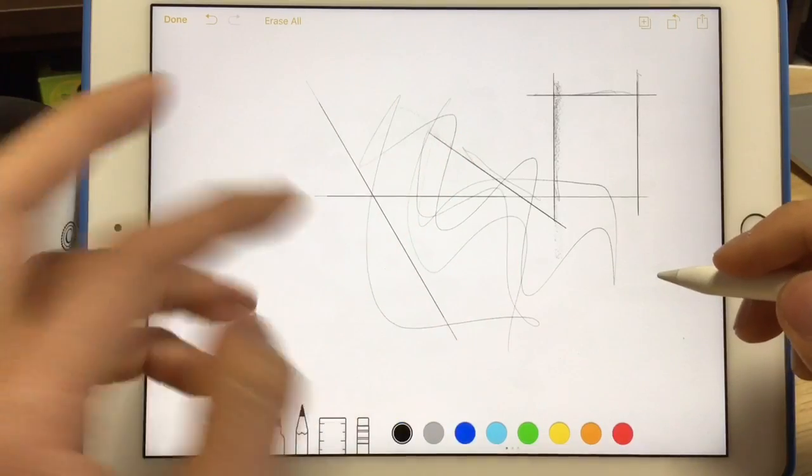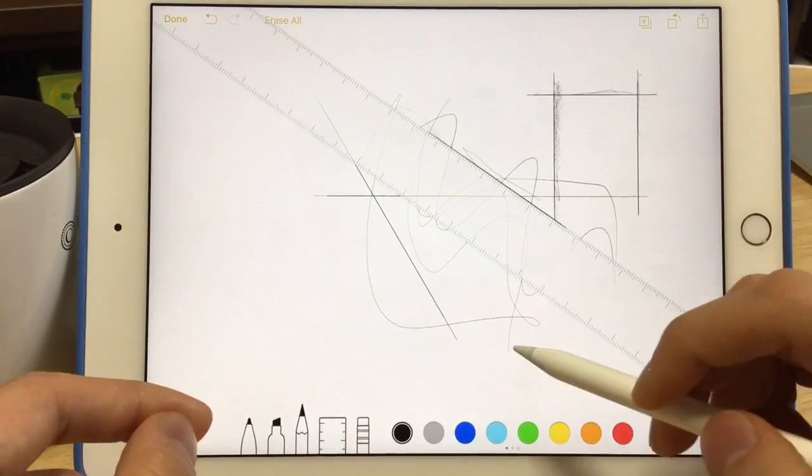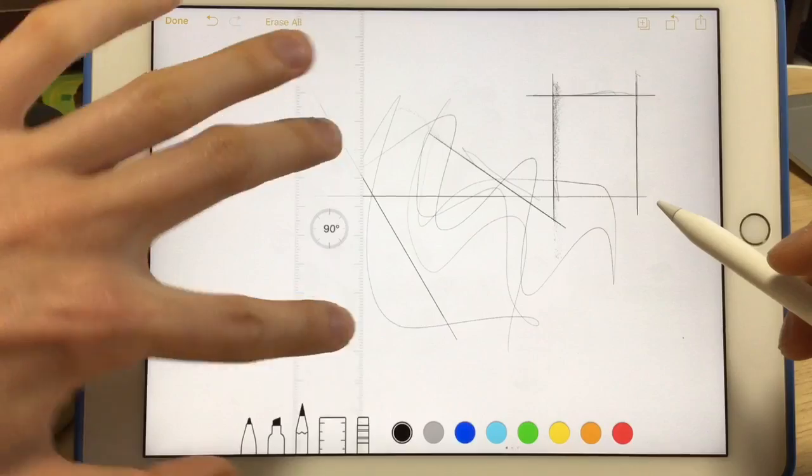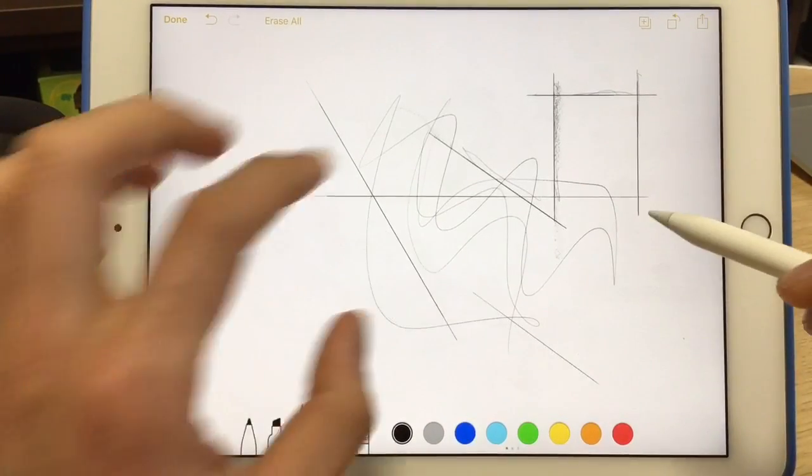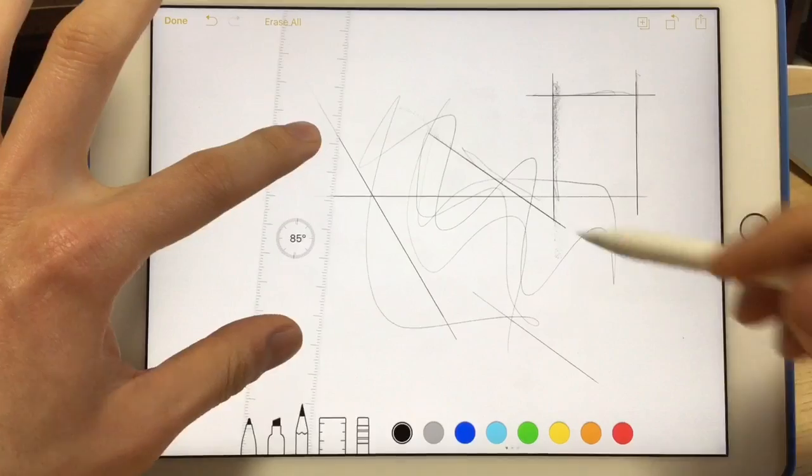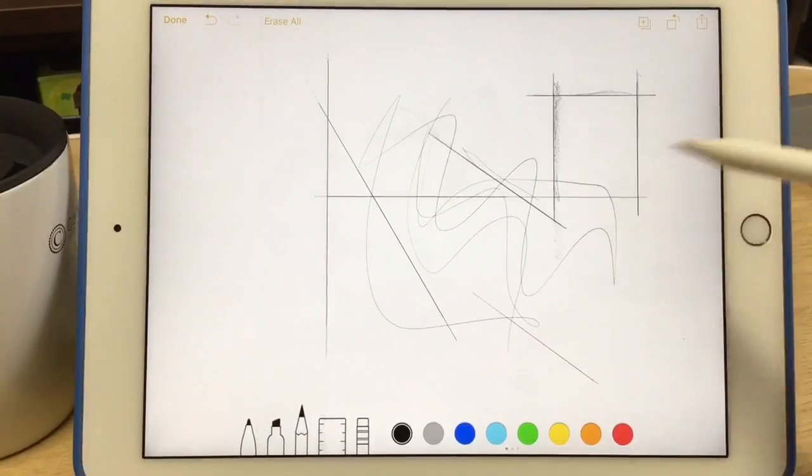It's a really useful tool because usually you would have to click down here to activate the ruler, set it in exactly the place you want it, draw the line, and then switch it off. But now you can just have this quick shortcut, draw a nice vertical line, take it off, it's done.